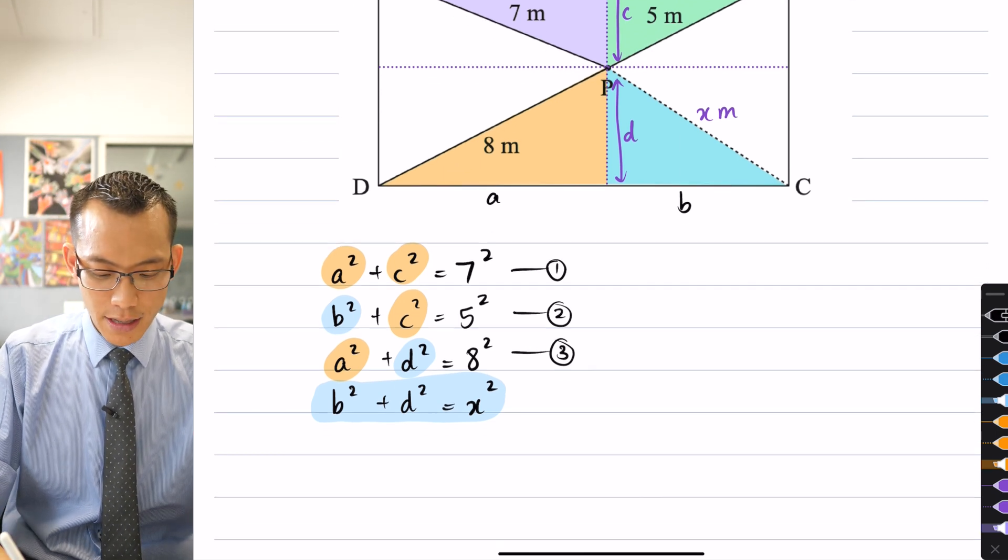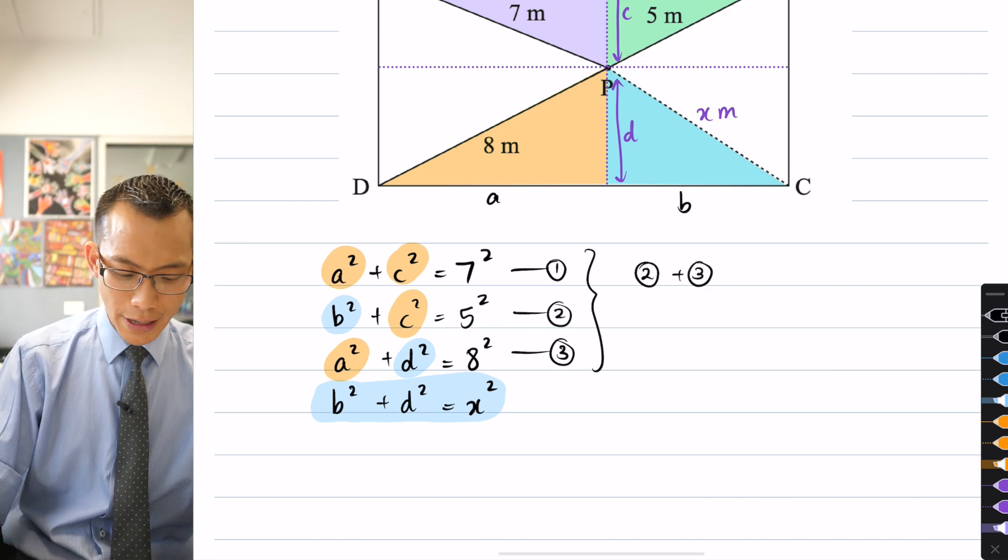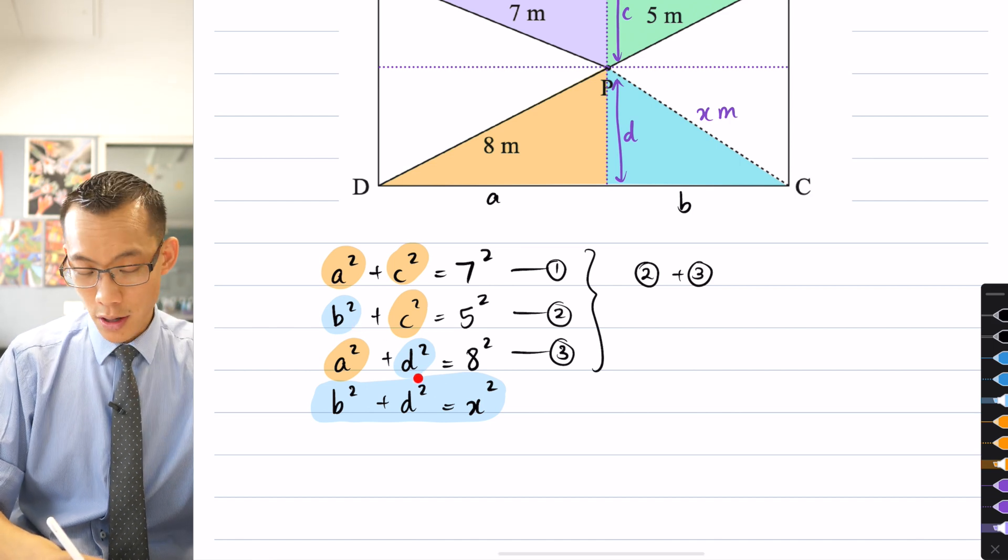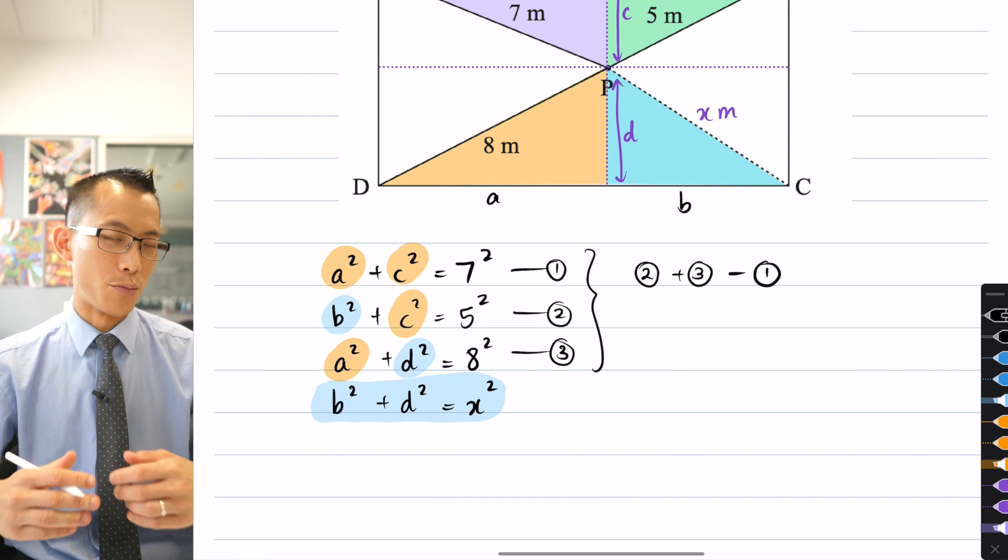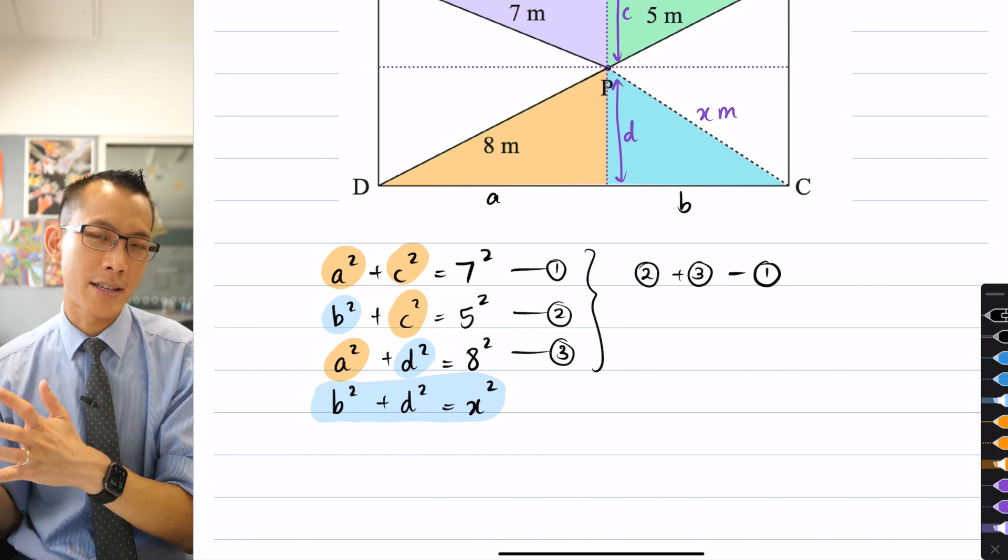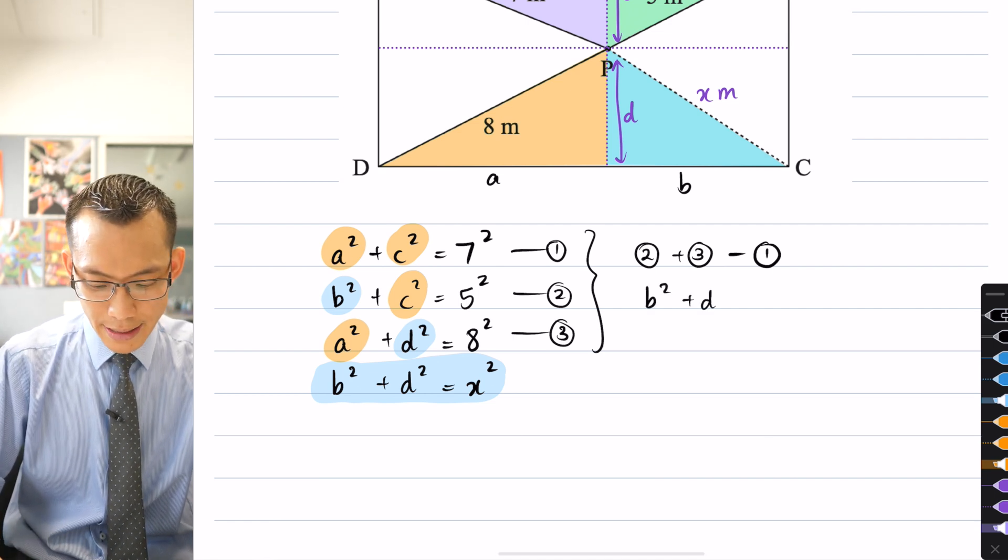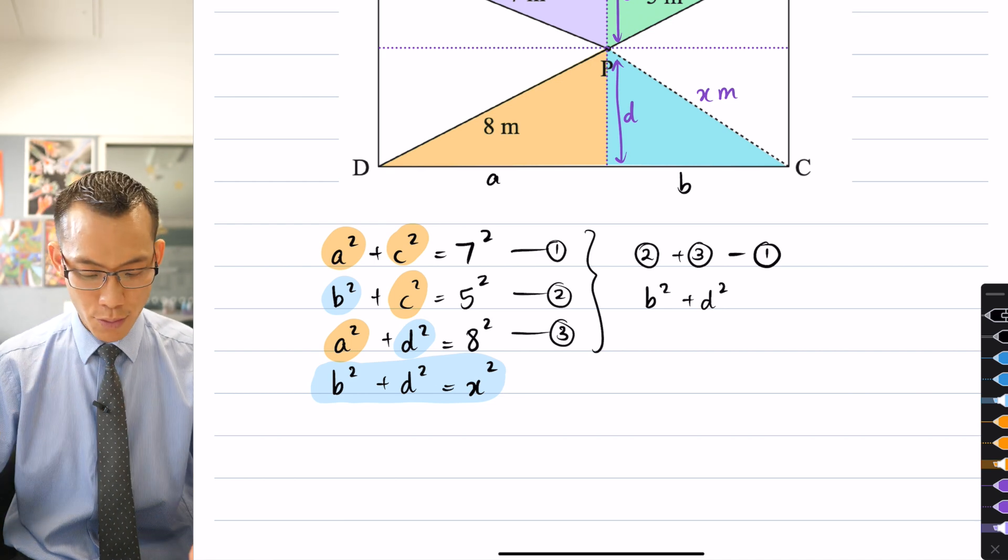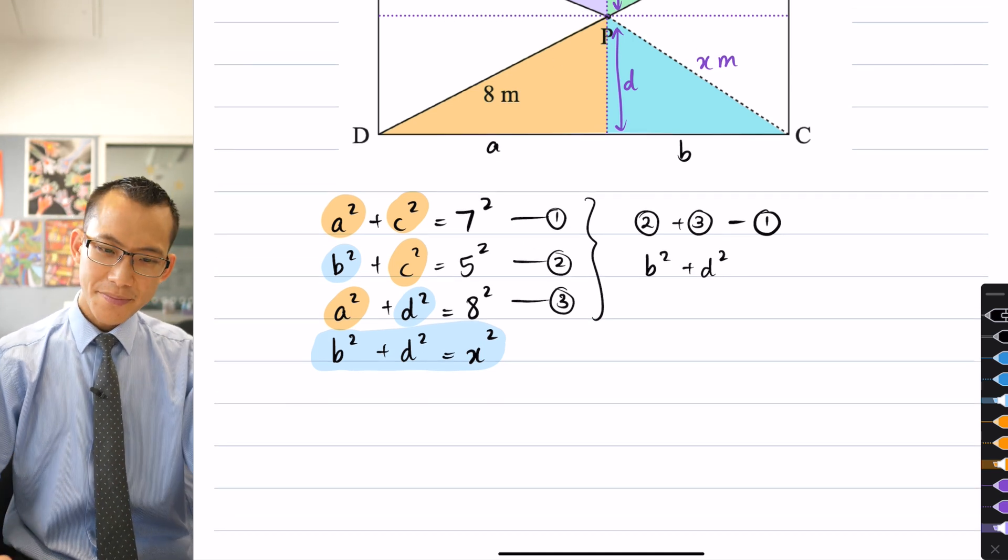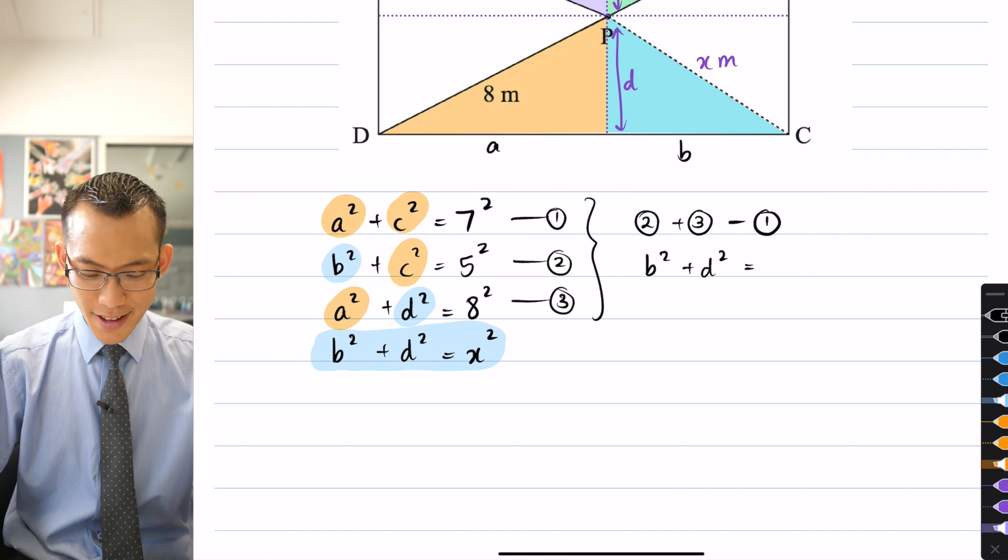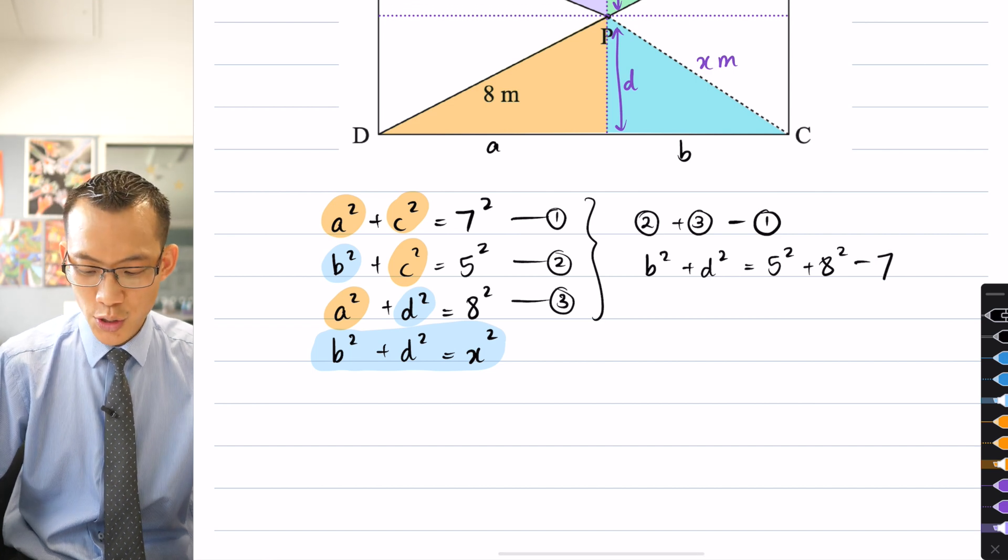So I guess the way that I would write this is I would say, taking all of these, I would say if you add equations 2 and 3, you will get the B² and D² that you want, but you'll get the A² and C² that you don't want. So therefore, I'm going to subtract the first equation, which will eliminate those out. And then of course, whatever's happening on the right hand side, we can then deal with that. So what am I going to get? Well, as we mentioned, you'll get the B² and the D², the A² and the C² will be removed. And what do you get on the right hand side? We get equation 2 gives us 5², equation 3 gives us 8², and then equation 1 gives us 7².